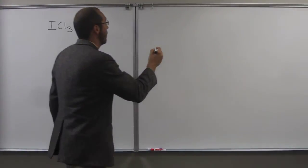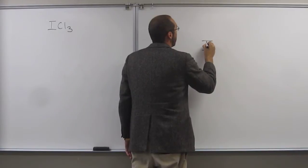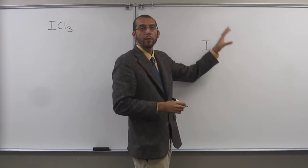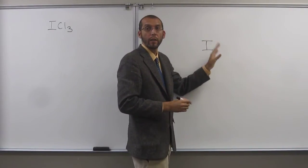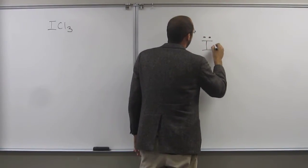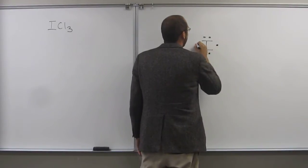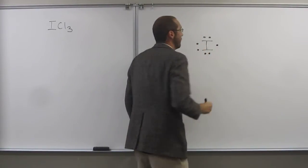So let's go ahead and draw the iodine as our central atom and then draw the Lewis structure, then draw its valence electrons around it. 1, 2, 3, 4, 5, 6, 7.